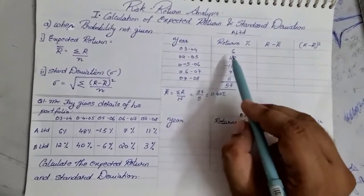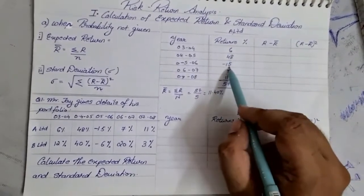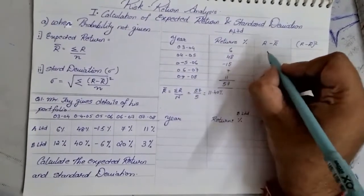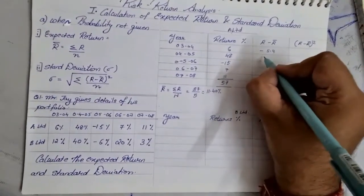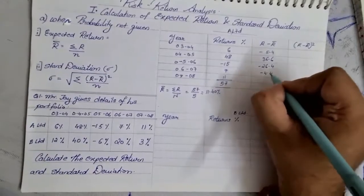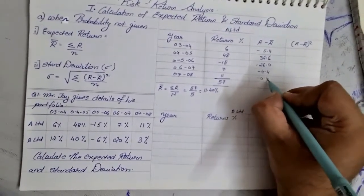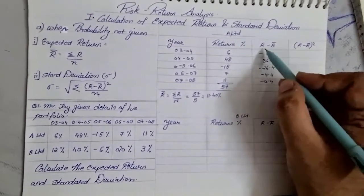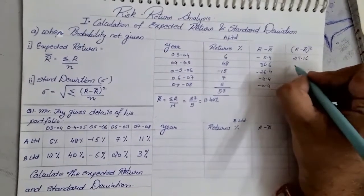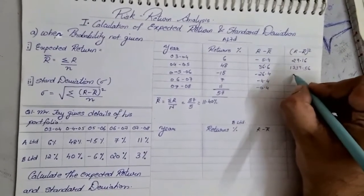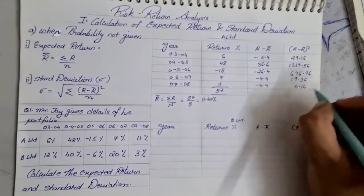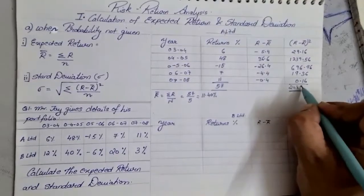To find standard deviation, the next column is R minus R-bar. Subtracting the expected return of 11.4 from each return: 6 minus 11.4 = negative 5.4, 48 minus 11.4 = 36.6, negative 15 minus 11.4 = negative 26.4, 7 minus 11.4 = negative 4.4, and 11 minus 11.4 = negative 0.4. The squares of these values are 29.16, 1339.56, 696.96, 19.36, and 0.16, totaling approximately 2085.20.